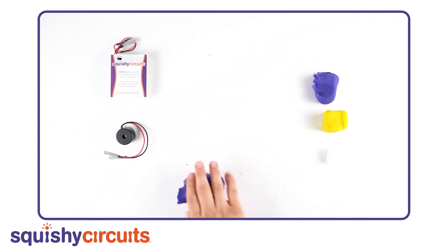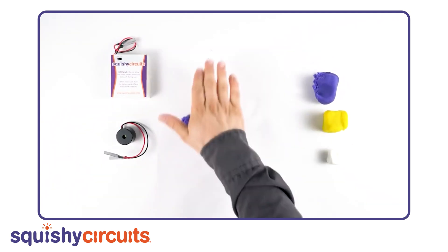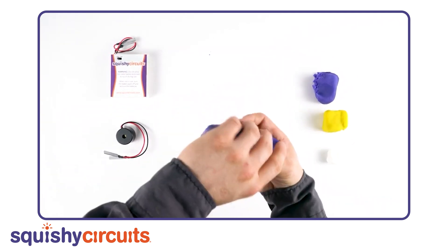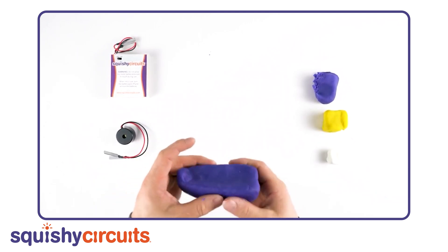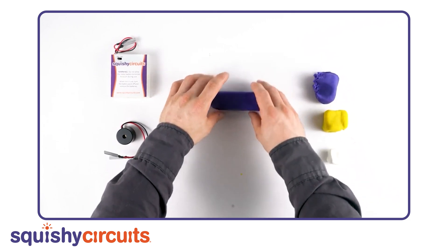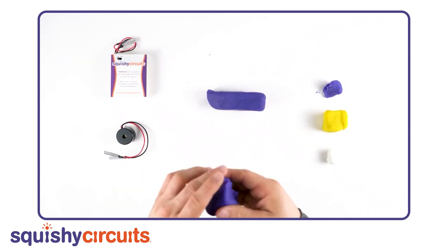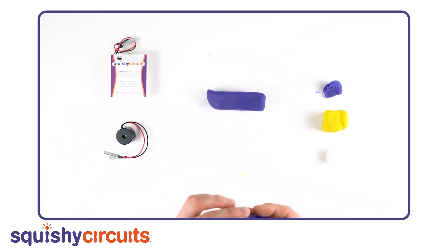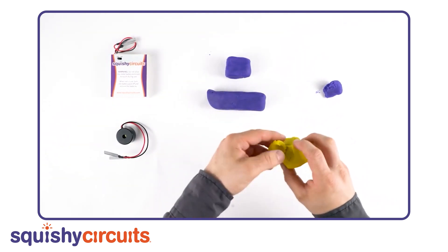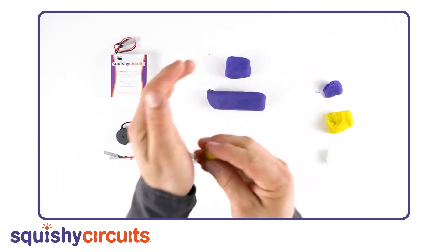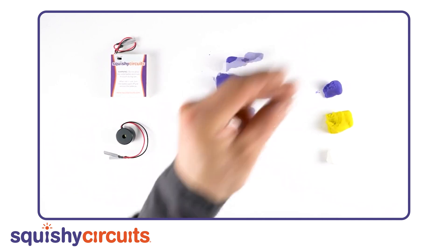As a second example, let's create a beeping tugboat. Take a piece of conductive dough and mold it into a boat shape. Select another piece of dough and create a cabin that will sit within the boat. Add windows, stripes, buoys, and more to your boat. Get as creative as you'd like.